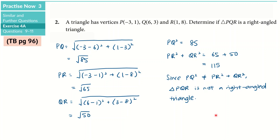Since PQ² is not equal to PR² + QR², we conclude that triangle PQR is not a right-angled triangle. All this working serves as our justification for that conclusion.